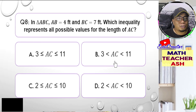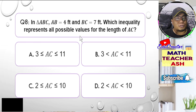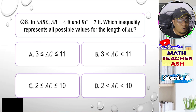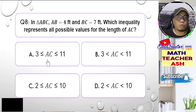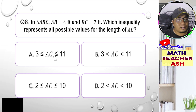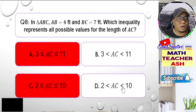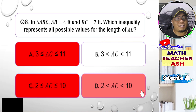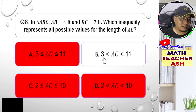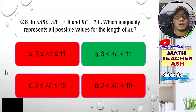We already have two sides: 4 and 7. Adding them gives 11, so we can already see the correct answer — letter B, because AC must be greater than 3 and less than 11. The equal sign is not applicable in the triangle inequality rule, so choices A and C are wrong. Choice D mentions less than 10, which doesn't match 4 + 7 = 11. So the answer is letter B.